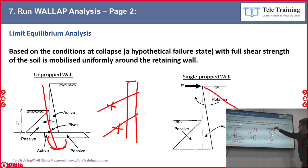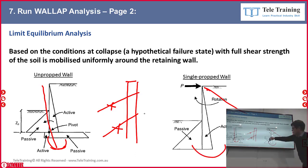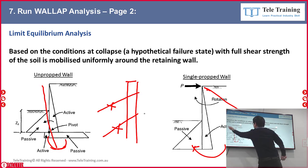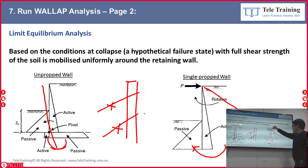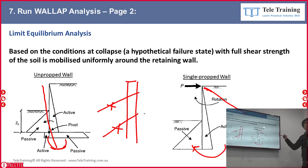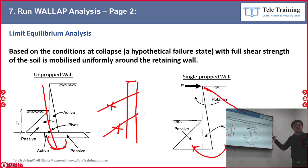For the single-anchor case, you still have a rotation direction — it's a backward rotation. The toe kicks out instead of the wall falling forward. Because you have a support at the anchor point, the top won't fail, but the toe will kick out. WALLOP works out a factor of safety for this mechanism.